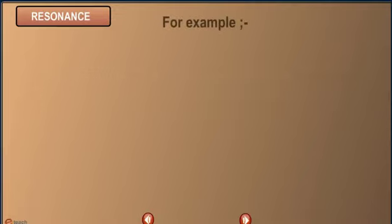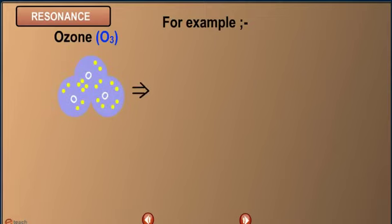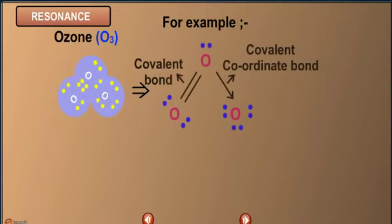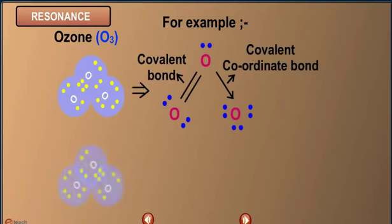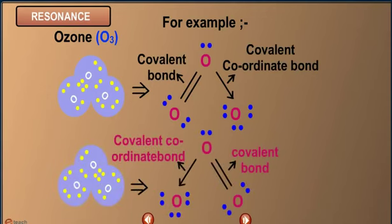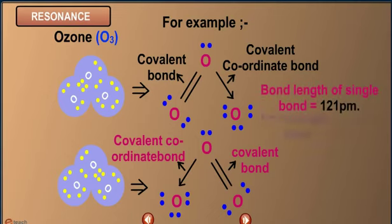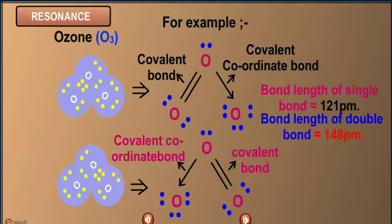For example, Ozone O3. It has 1 covalent coordinate bond and 1 covalent bond which keeps on interchanging. The bond length of single bond is 121 picometer and bond length of double bond is equal to 148 picometer.